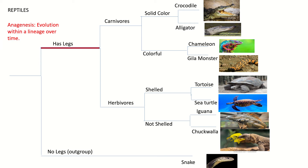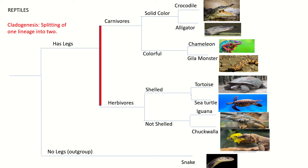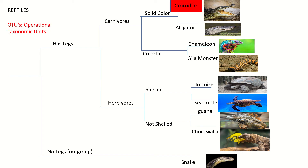Our first definition is anagenesis, which is the evolution within a lineage over time, and on this tree is represented by our horizontal lines. The next definition is cladogenesis, which is the splitting of one lineage into two, and on this tree is represented by the vertical lines.